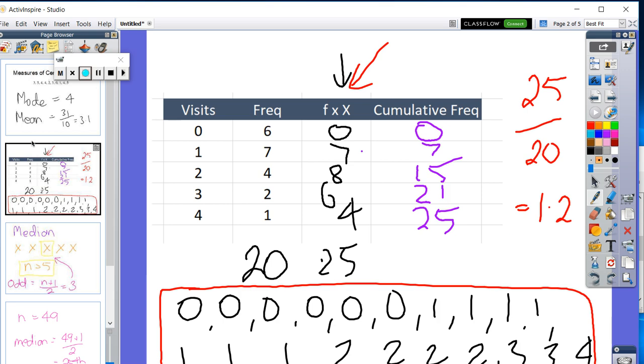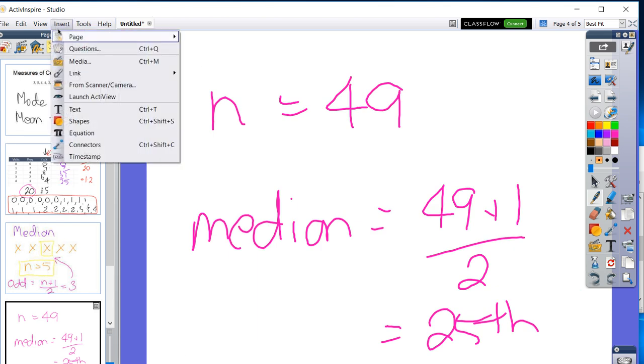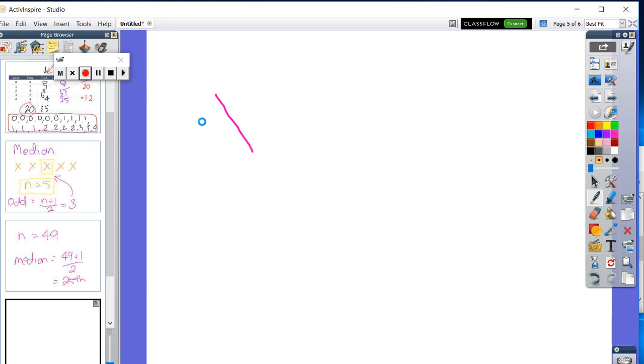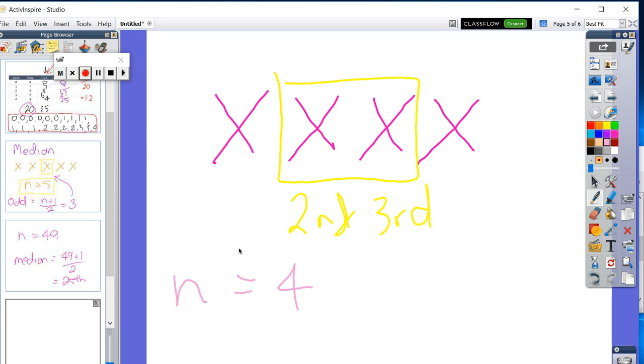Now, we're going to go back to this example here. How would we work out what the median is in this particular group? Well, we need to find out what position it is. So, N is equal to 20. And I'm going to have to jump back and explain how to do it for an even number. When it's an even number, there's actually two medians. And in this case, it's the second and the third. Now, N is equal to four. So, how do you do this? Well, you go N divided by two is the first position. And the second, N divided by two plus one. And that equals second and the third.